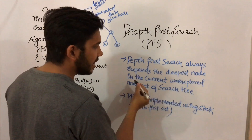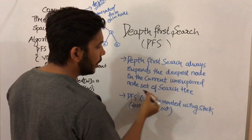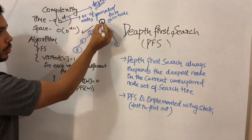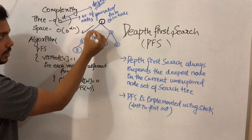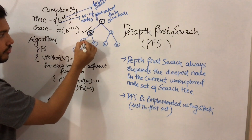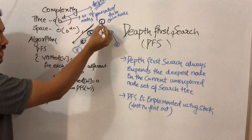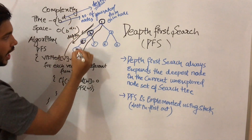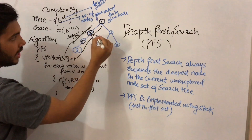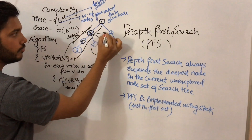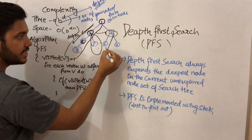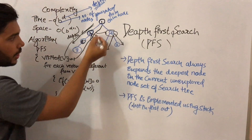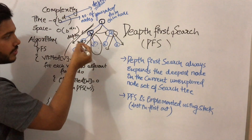Depth first search always expands the deepest node in the current unexplored frontier of the search tree. Suppose you are at node 1, then you search node 2, then node 4 — going deeper in this direction. You explore all nodes in depth first, and after returning you find the next node. After coming back from node 5 you move to node 3, then visit nodes 6 and 7. All successor nodes are searched first.